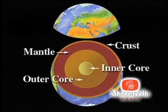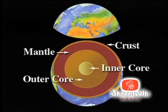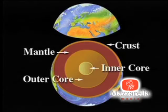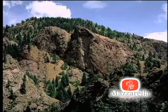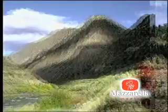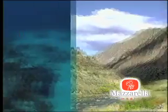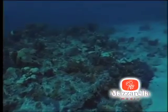Both the inner core and the outer core are extremely hot, and both are mostly made of iron. Mountains, valleys, and even the ocean floor are all part of the Earth's crust. Most of the Earth's crust is made up of rock.